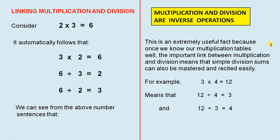This is an extremely useful fact because once we know our multiplication tables well, the important link between multiplication and division means that simple division sums can also be mastered and recited easily. For example, 3 times 4 equals 12 means that 12 divided by 4 equals 3 and 12 divided by 3 equals 4. So that shows the close link between multiplication and division.